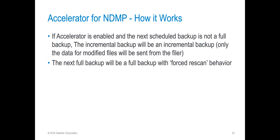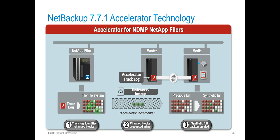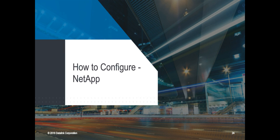That's an overview of NDMP, NDMP for Clustered ONTAP, and NetBackup Accelerator. In the Accelerator diagram: on the left you have your filer and file system — the green blocks show what's being changed. The track log is copied to your master and media servers. Accelerator incrementals only get those changed blocks. When you do a new full, it takes the previous full plus the new changed blocks and creates a new synthetic full on the back end — all within the catalog. So for a five-terabyte file system with only a few changed blocks, you're not transferring the entire five terabytes for the next full.